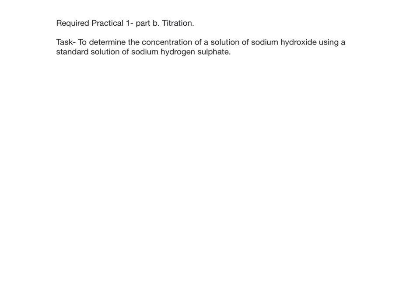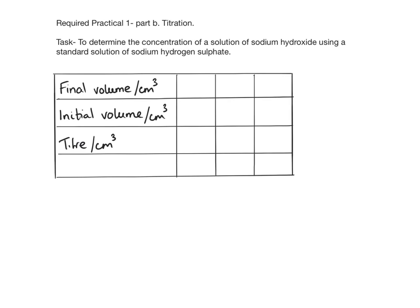The first thing we need to do is to draw a suitable results table. Make sure you leave space for at least three titres. You can always add more if needed.